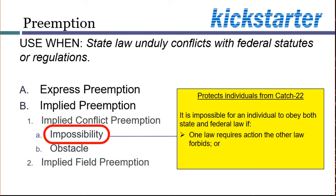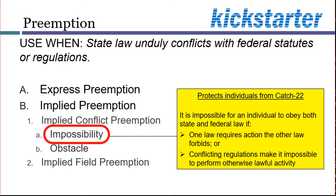No matter what people chose to do with regard to the guns, they'd be breaking some law — either the federal one or the state one. A less dramatic example of impossibility arises if there are irreconcilable provisions in laws that regulate the manner of doing something that is otherwise legal. For example, a state law might require a certain product to be sold in a red box, while Congress requires it to be sold in a green box. Selling the product is supposed to be legal under both laws, but these differences make for an impossible situation.